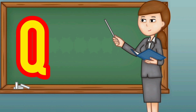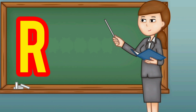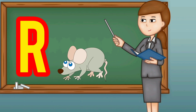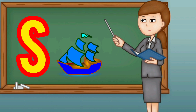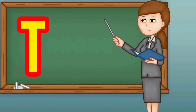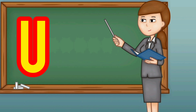Q for queen, R for rat, S for ship, T for telephone, U for umbrella.